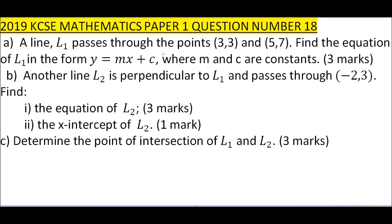Another line L2 is perpendicular to L1 and passes through the point (-2, 3). Then, find the equation of line L2, the x-intercept of L2, and determine the point of intersection of L1 and L2.